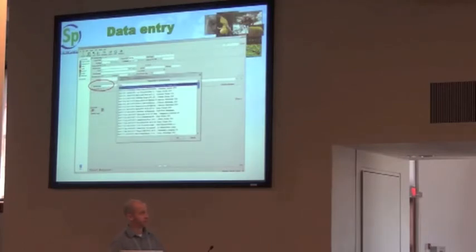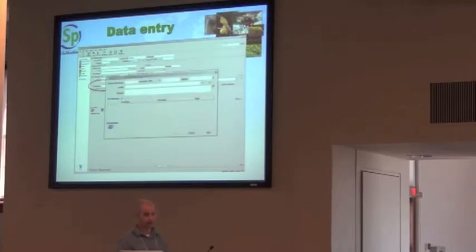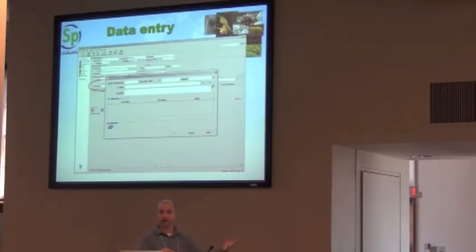The same is true for localities. You can type in the first couple of letters of a field name or field number, and it gives you a list of all available options already in your system — you can pick one and reuse it. All of your locality information is stored in three separate tables: a collecting event connected to a locality, which is connected to a geography, all in a relational structure so you can reuse them over and over again across different dates and collectors.